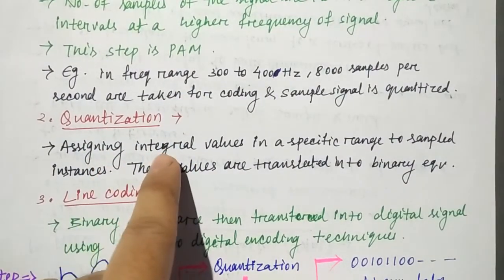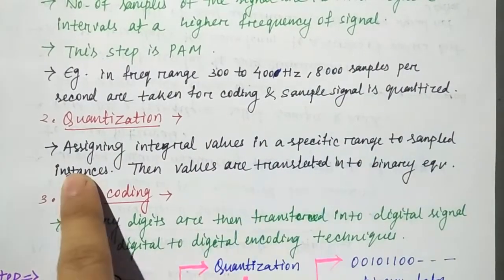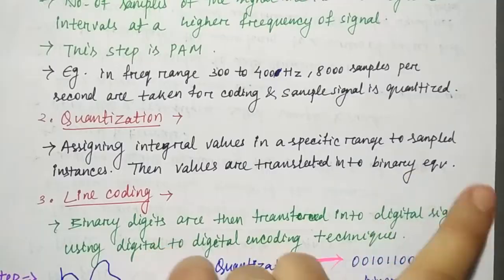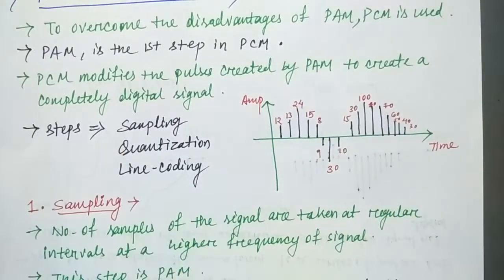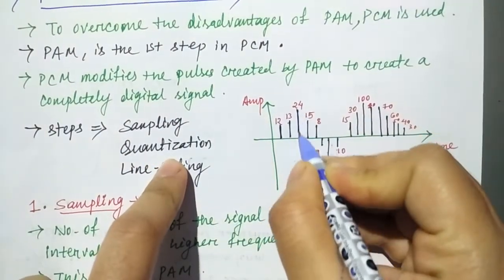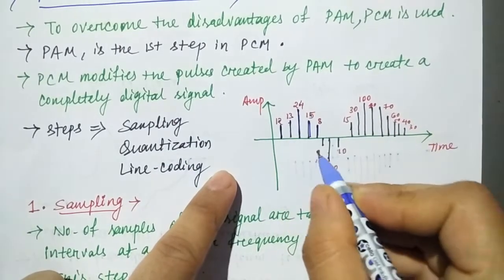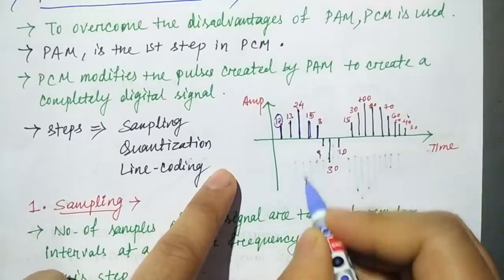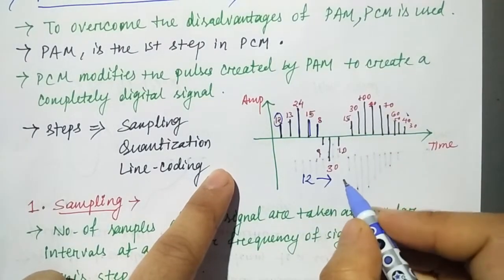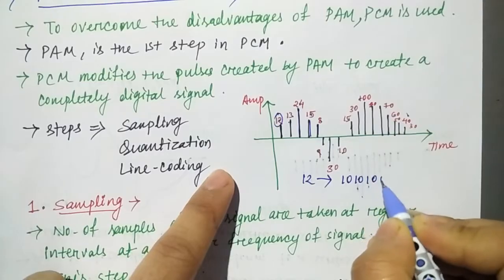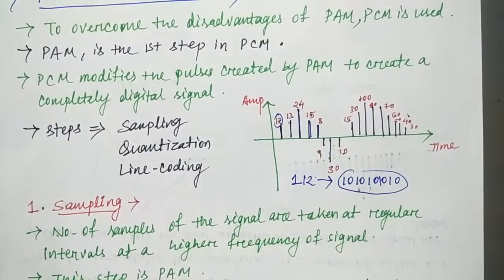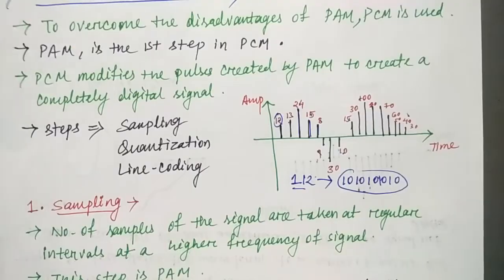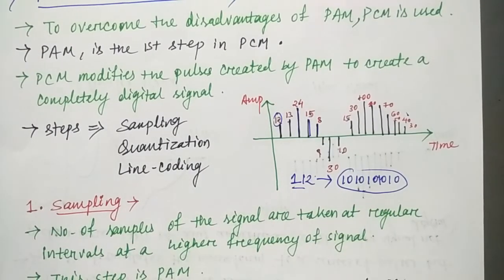Quantization involves assigning an integral value in a specific range to sample instances. The values are then transmitted into their binary equivalents. Essentially, every one of the pulses from PAM is assigned an integer value. For example, if the value is 1, 1, 2, those integer values are then converted into their corresponding binary values.